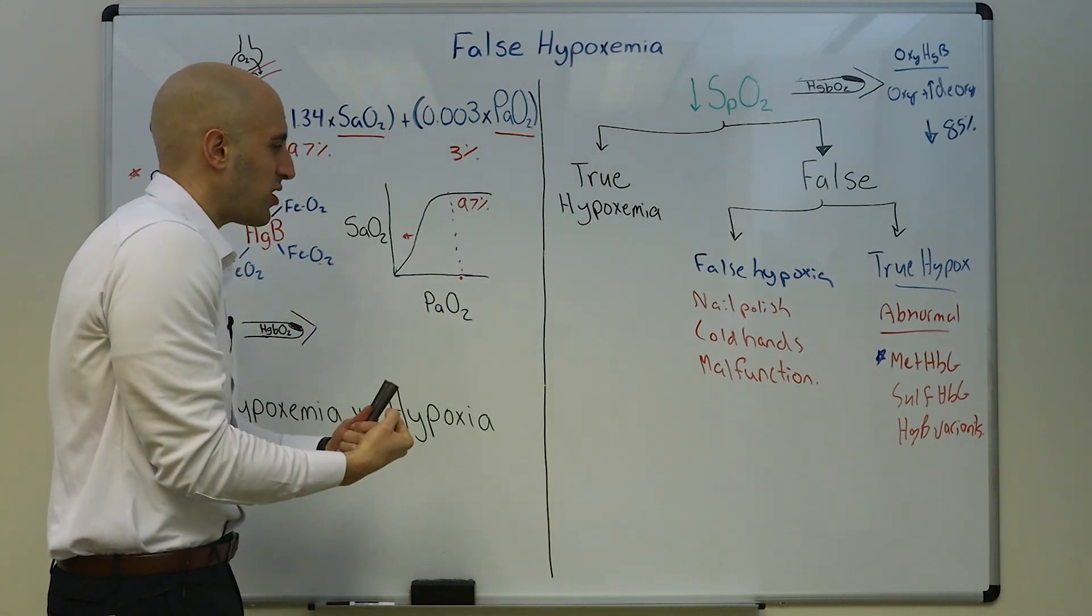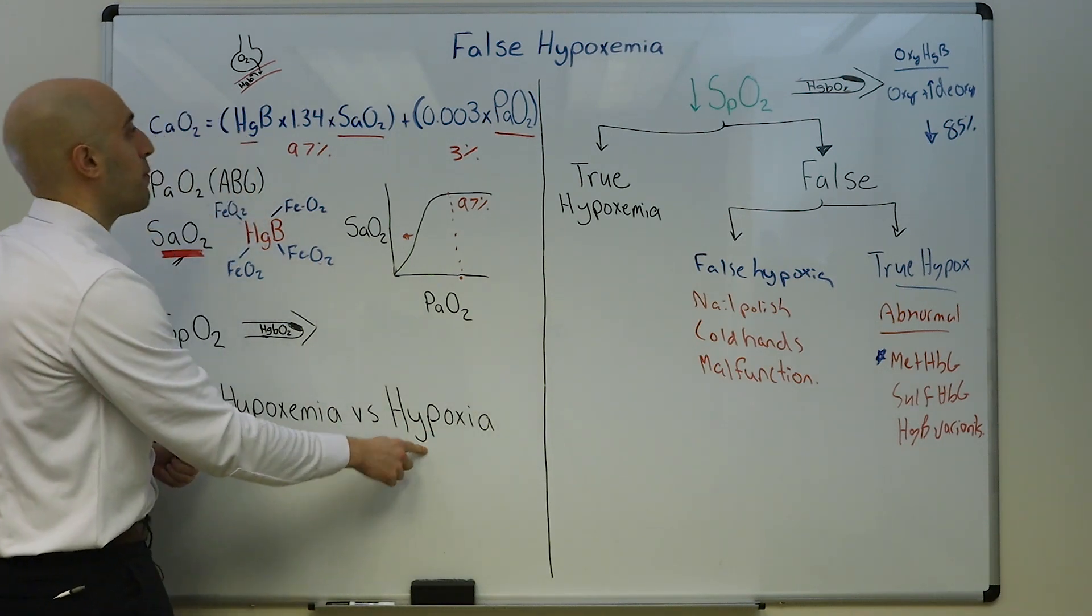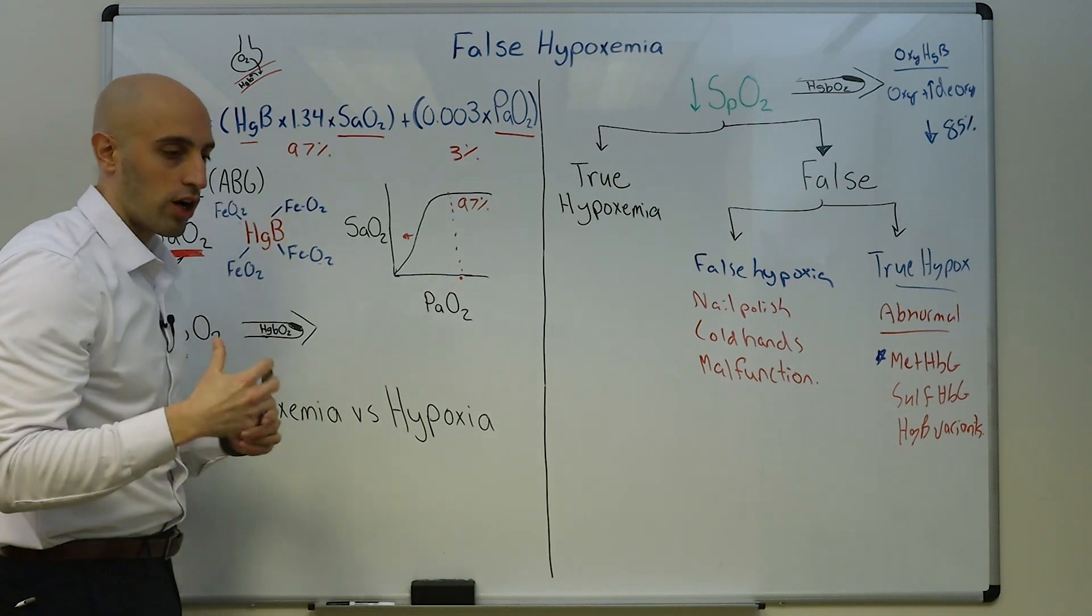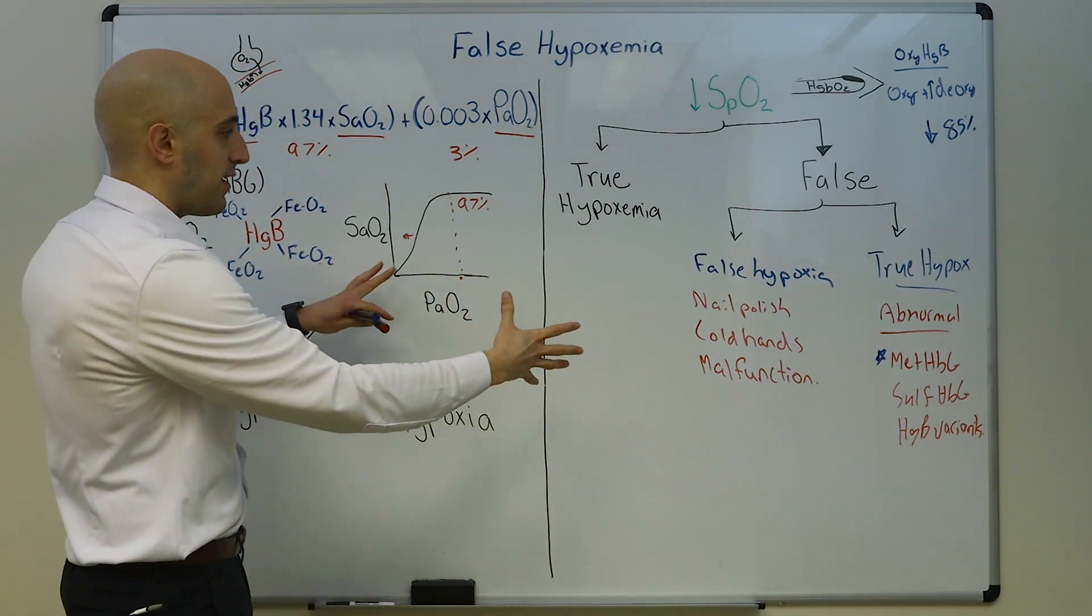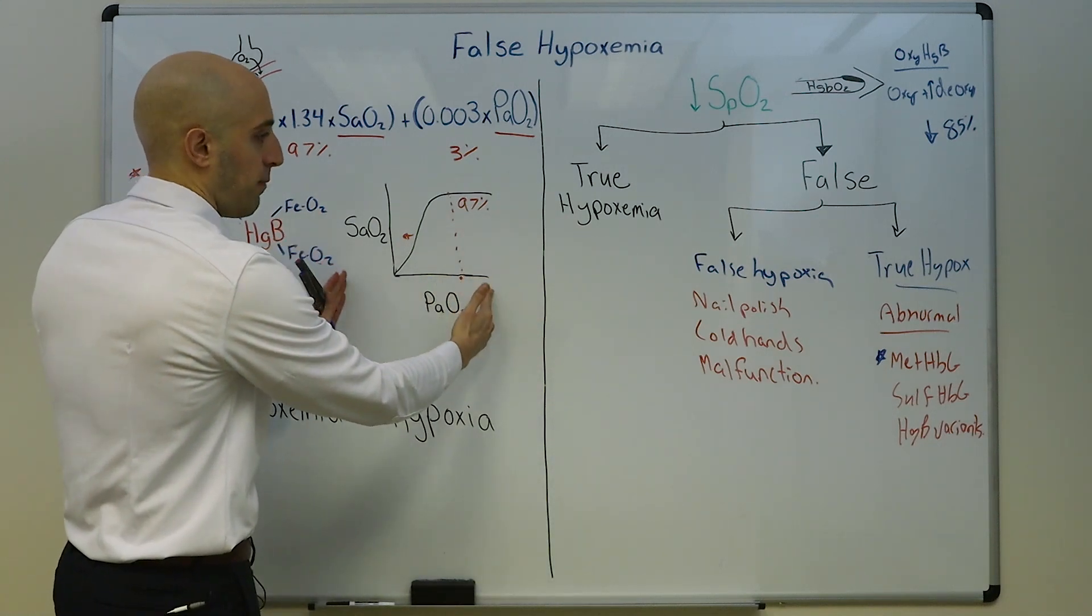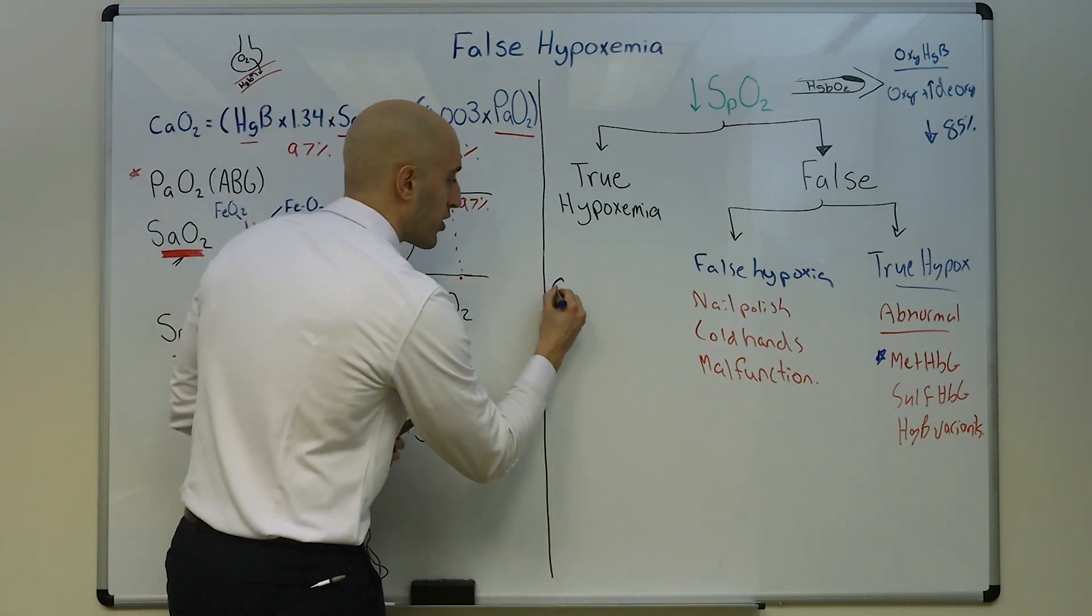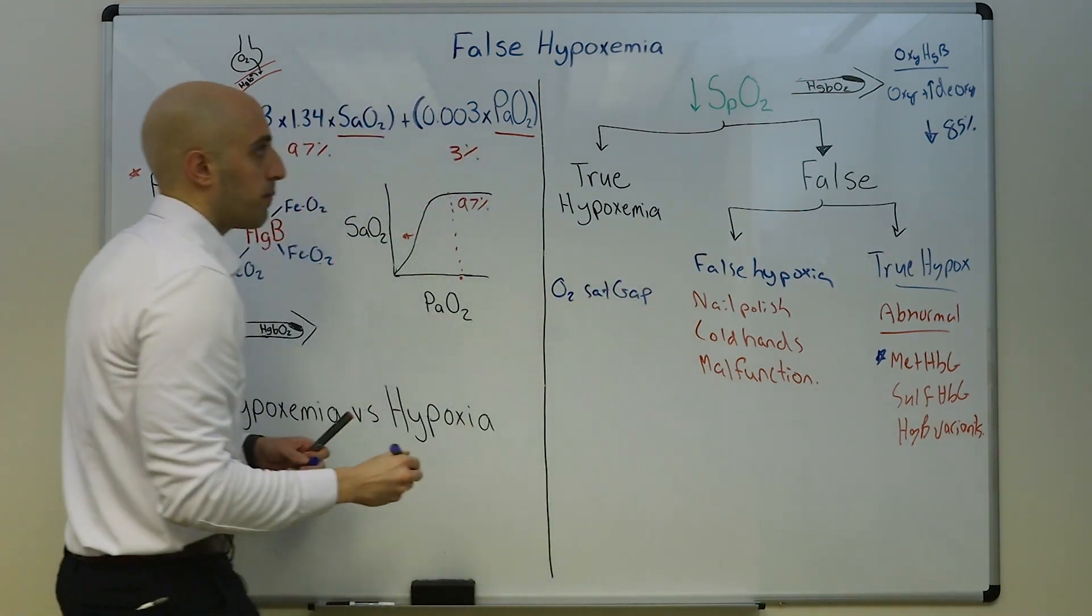So methemoglobin absorbs the light wavelength like deoxyhemoglobin, dropping the SpO2. It shifts this curve to the left, making hemoglobin hold on to that oxygen tighter. As a consequence, you have cellular hypoxia because hemoglobin is such an important determinant of the content of arterial oxygenation. How can you make that determination?